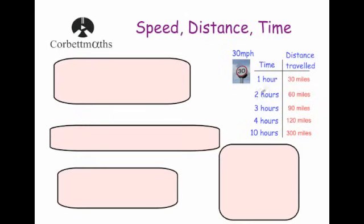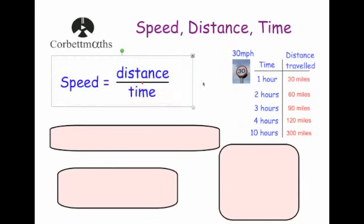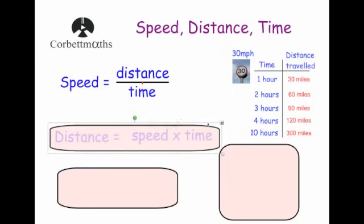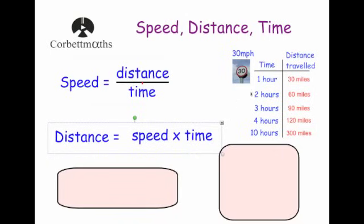As long as the time is in the units you want the speed in, speed is equal to distance divided by time. So if we didn't know how fast the car was traveling but knew it drove 60 miles in two hours, we divide distance by time to get speed. Distance is equal to speed times time — so at 30 mph for 10 hours, that's 10 × 30 = 300 miles.